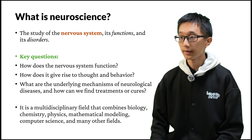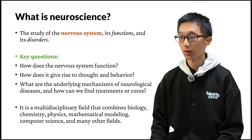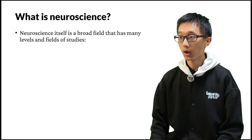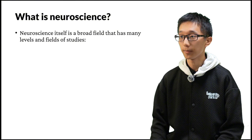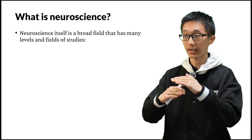Neuroscience is a multidisciplinary field that combines biology, chemistry, physics, mathematical modeling, computer science, and many other fields. Speaking of which, neuroscience itself is a broad field that has many levels and fields of study.